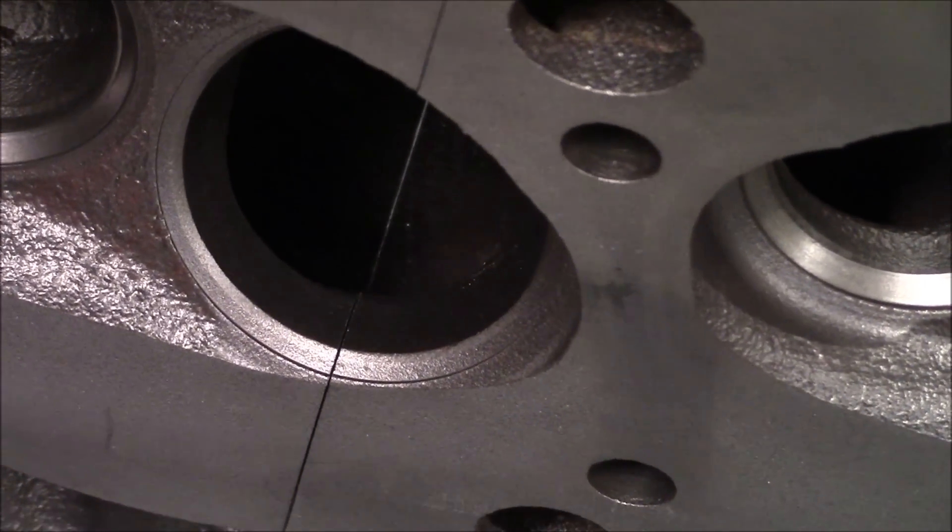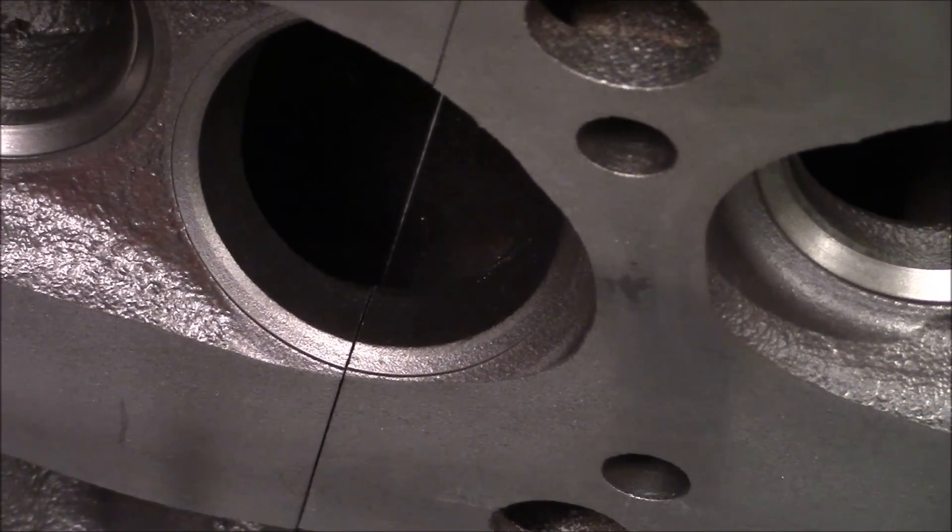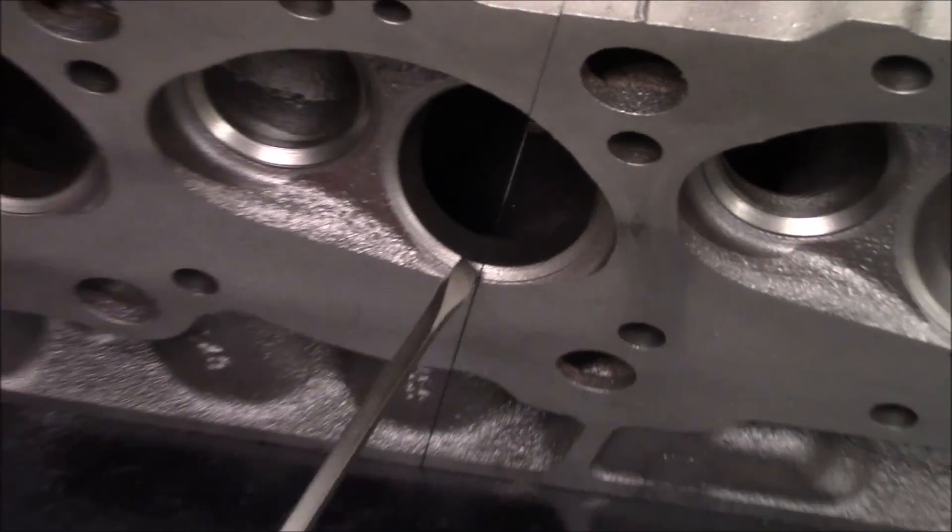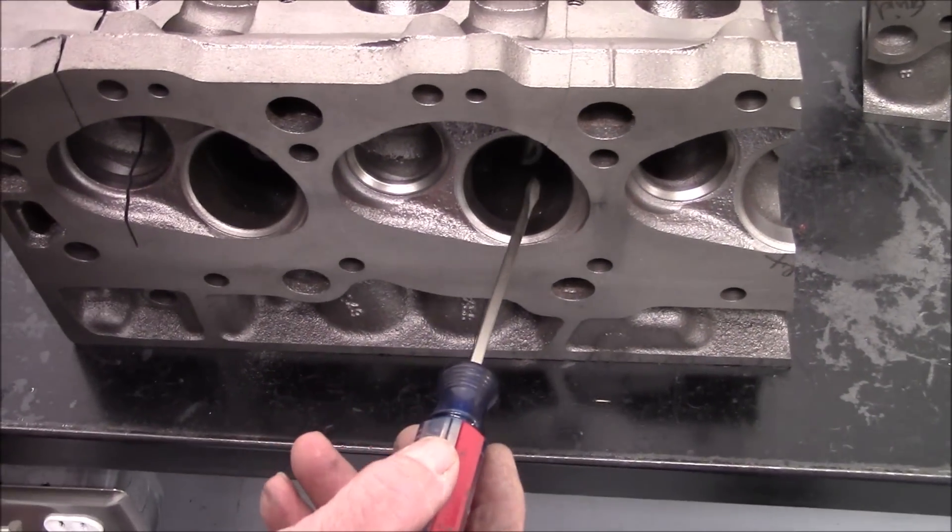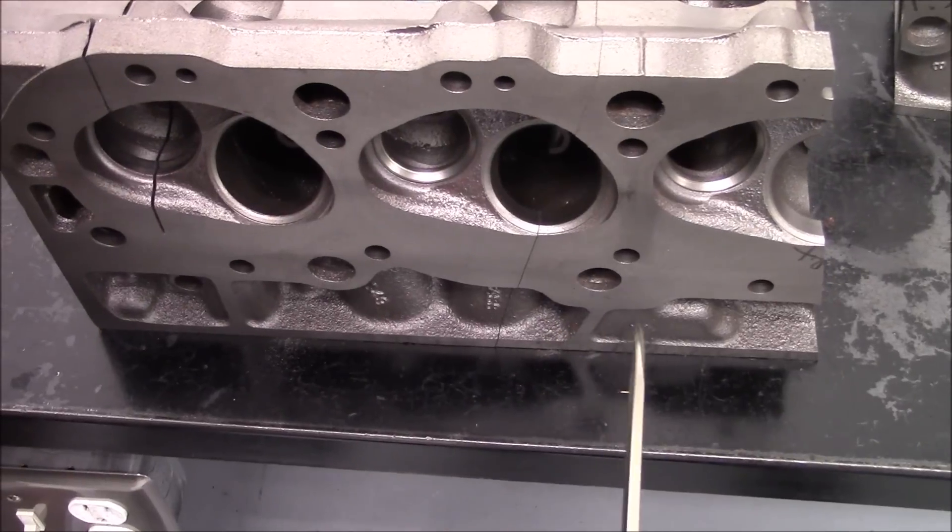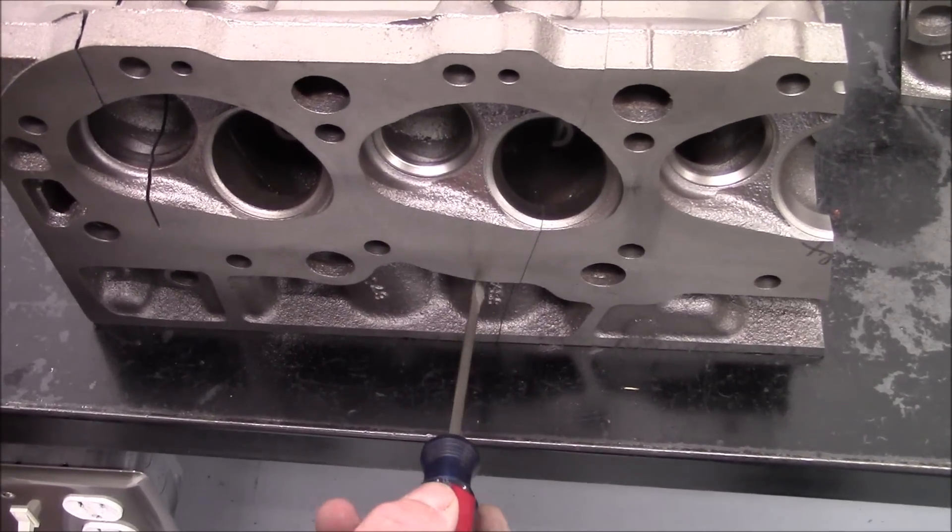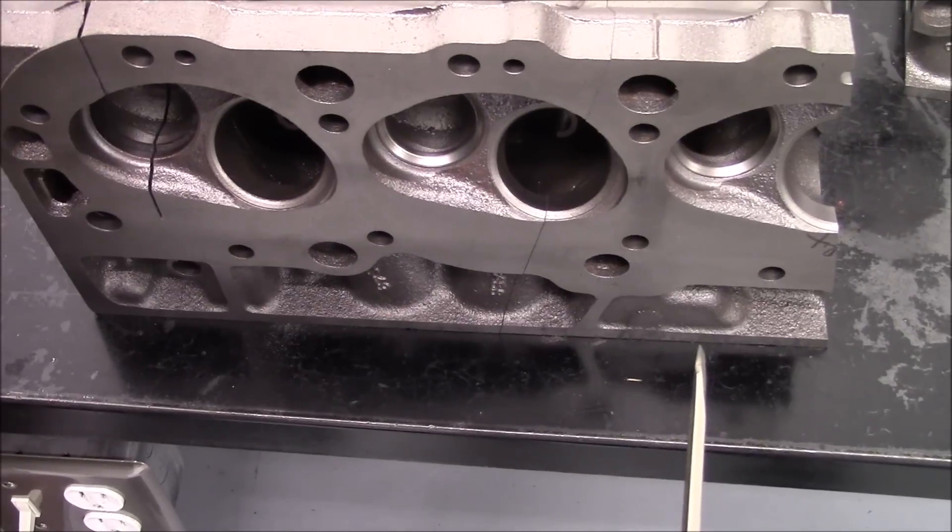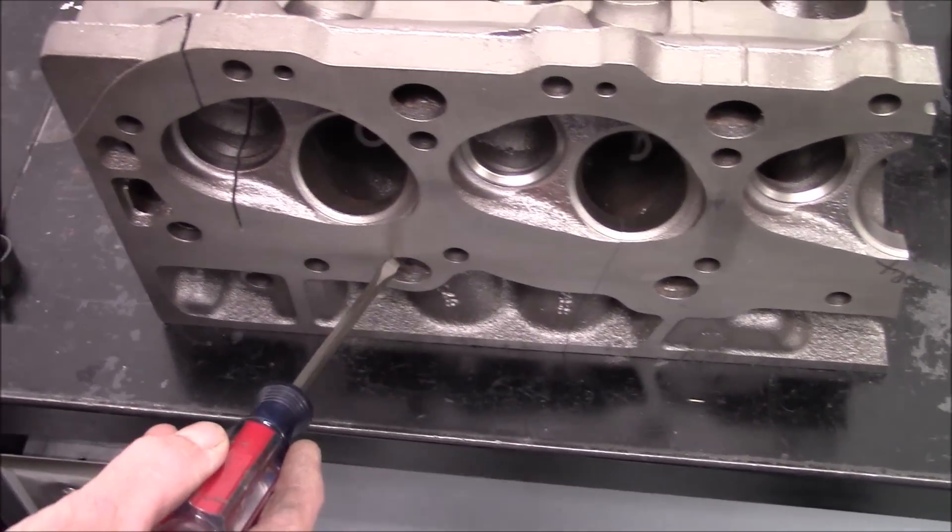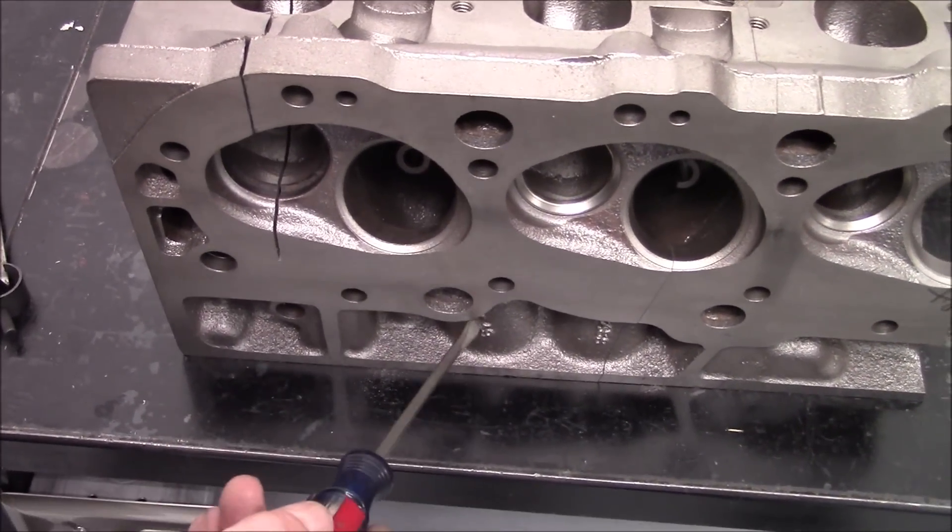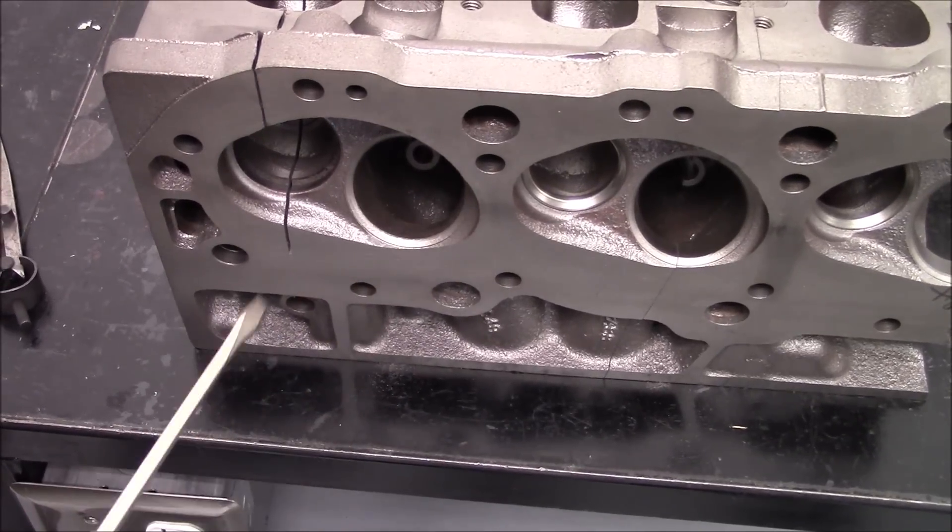Now, in our previous videos, we talked about how this would be the bad port right here, because as the air comes out of the port, it enters against the cylinder wall. As you can see, the direction of the port, this would be considered the good port. As you can see, as the air comes through the port, it enters to the center of the cylinder.